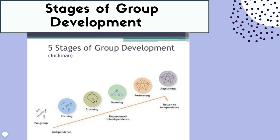I really like to use this visual so you can see the different stages, and also how group members move from independence to interdependence, and then return back to independence. Pre-group is before the group even forms, so members are not working dependently at all because they are not even in the group yet. Pre-group is 100% independence because there's no group formed.